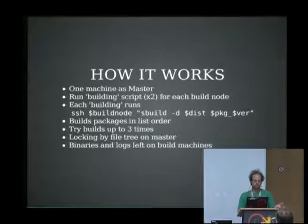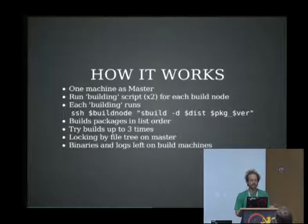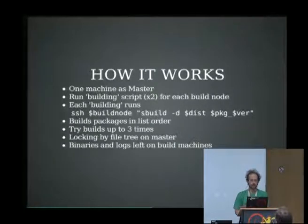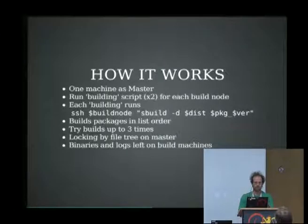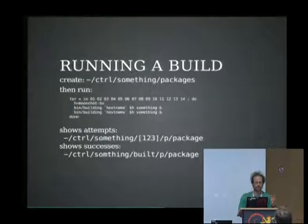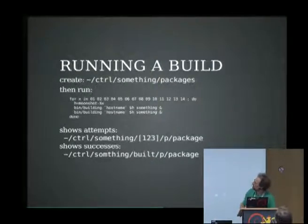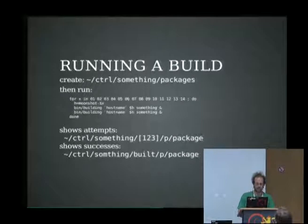We designate one machine to control it all, and run a building script for each build node. It turned out we could run two of those per build node and they didn't get any slower. All the script does is SSH to the build node and run sbuild on the next line in the package list. That's it — it's not very complicated. If it doesn't work, you try it again a second time and a third time. So that's all you need to rebuild everything in Debian on 14 servers, two things per server: create a package list and start them all off.